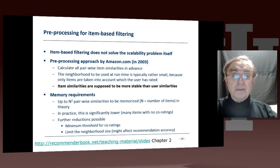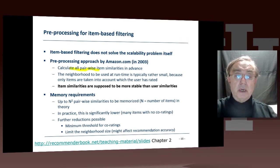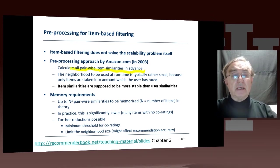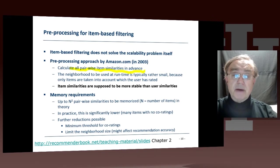Of course, you have to do this preprocessing. We pointed out that you can calculate all these pairwise similarities ahead of time. That wouldn't work, actually, if you had a lot of items — for n items, you have to calculate n squared similarities. That's probably prohibitive.